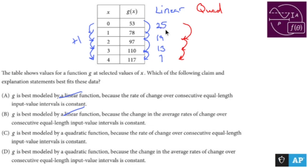In order to get from 25 to 19, you subtract 6. In order to get from 19 to 13, you subtract 6. And in order to get from 13 to 7, you subtract 6.